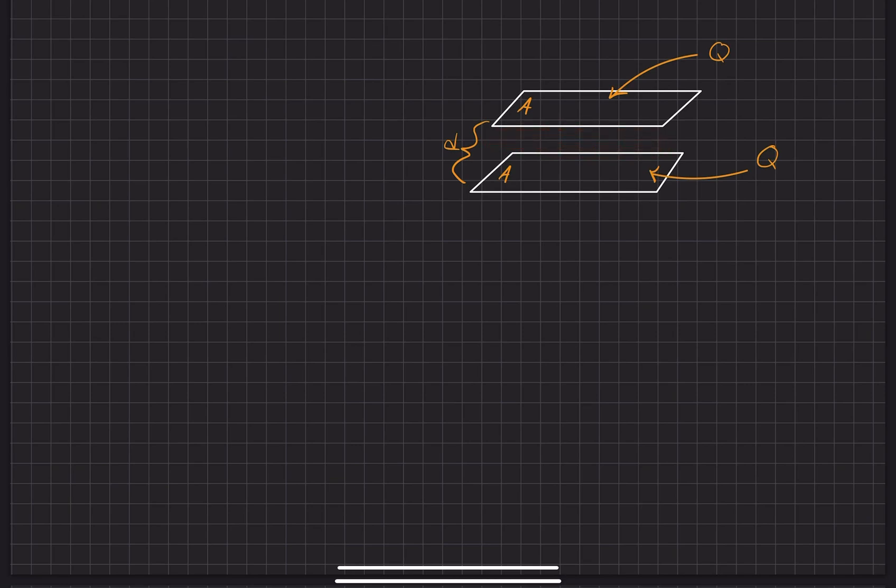First, we think about what the electric field lines look like. We know that the electric field emanates perpendicular to the surface, outward to infinity, and same thing for this side. These ones will go down in this direction relative to the way we're looking.